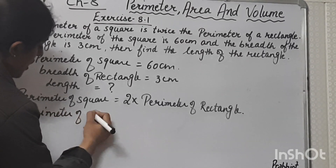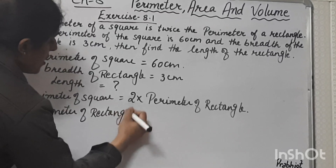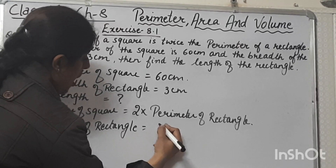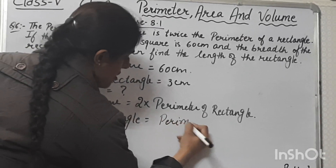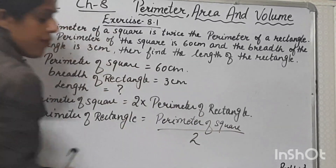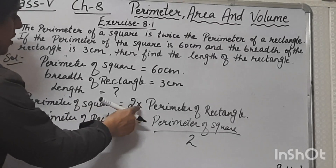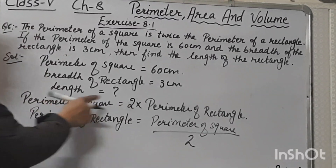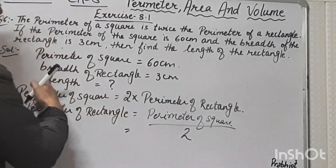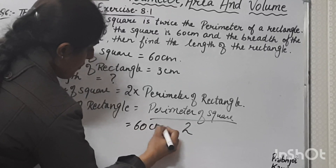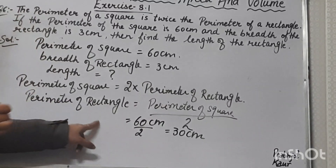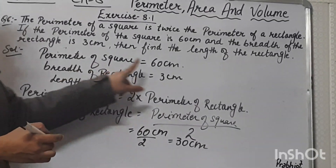If the perimeter of the square is double the perimeter of the rectangle, that means the perimeter of the rectangle is half the perimeter of the square. So perimeter of rectangle = perimeter of square divided by 2, which is 60 divided by 2, equal to 30 centimeters.